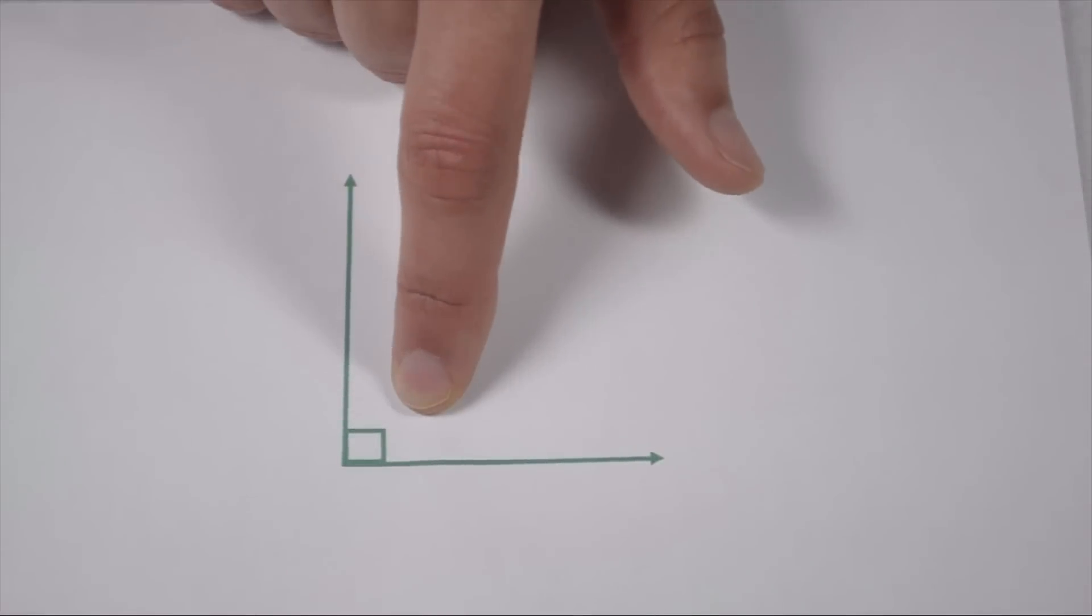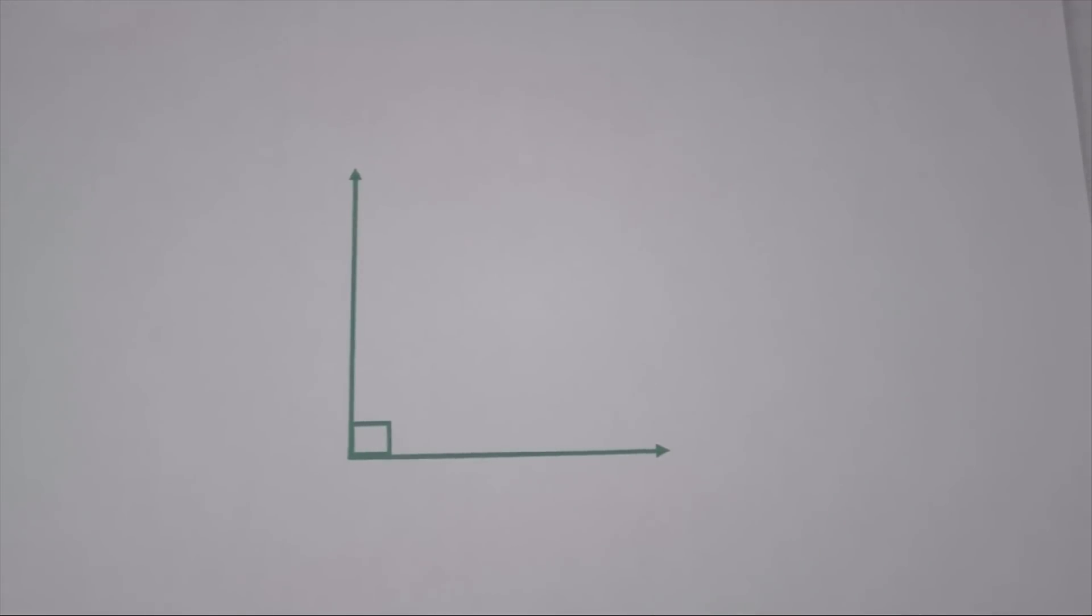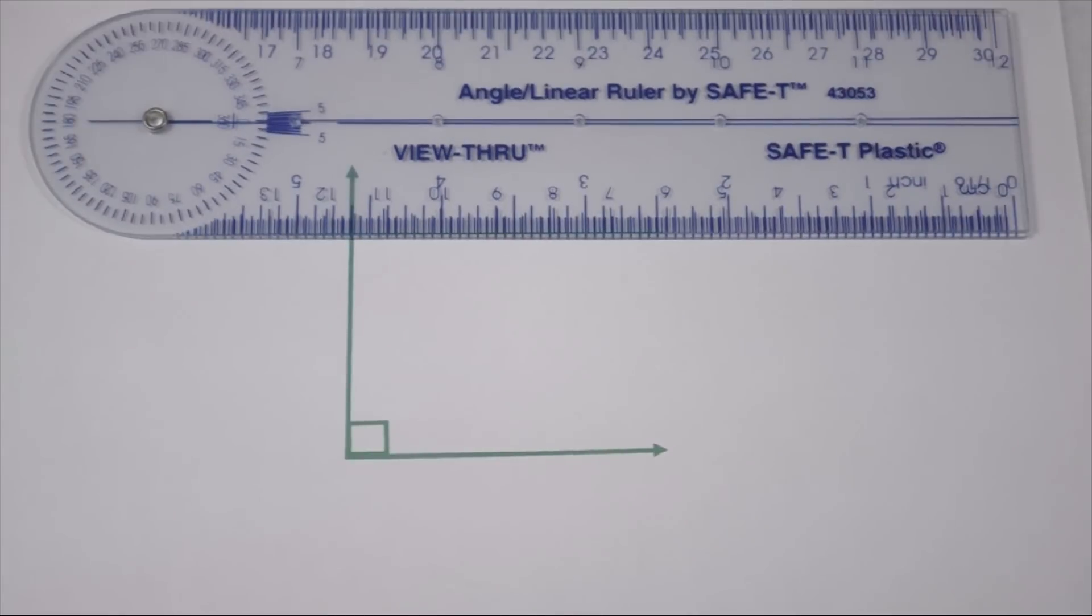We can see looking at our angle that most likely it's going to be a right angle. If we want to measure and know for sure, one tool we can use is an angle ruler.